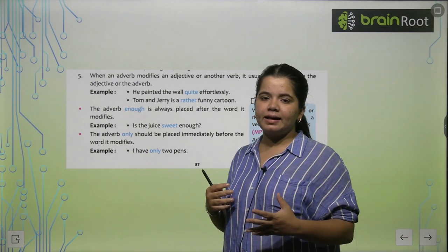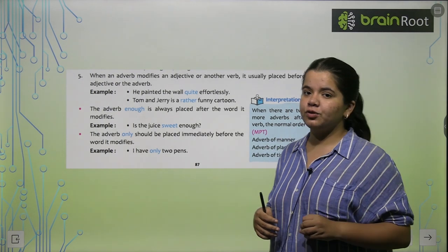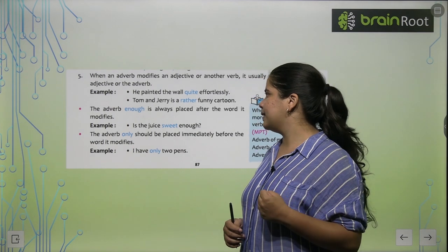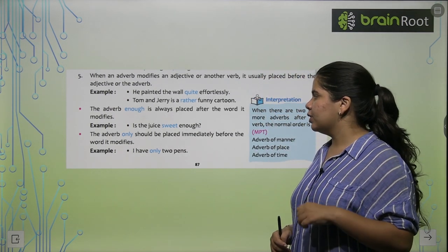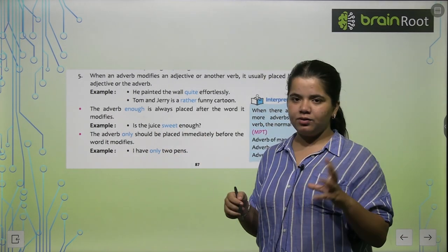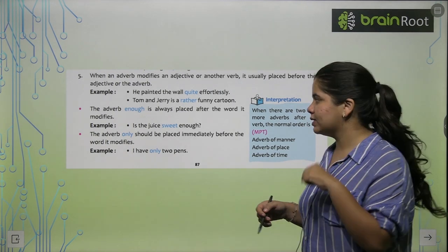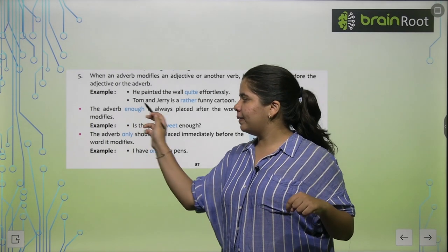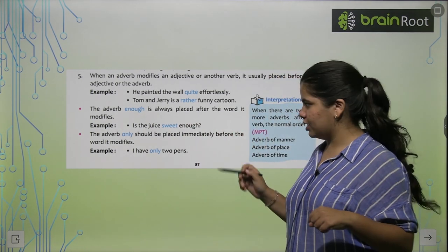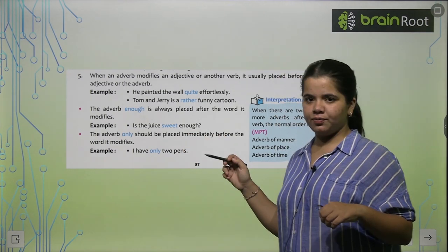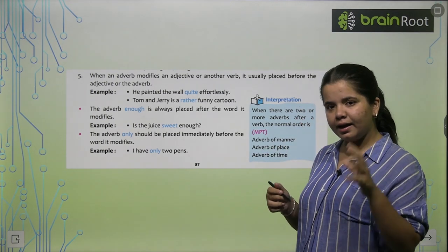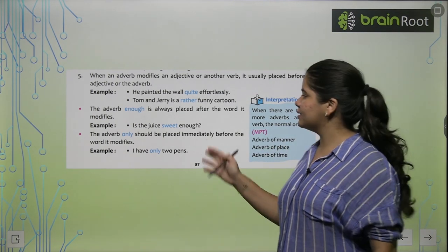You have to read these rules again and again, otherwise you will forget them. The adverb 'enough' is always placed after the word it modifies. For example, 'Is the juice sweet enough?' — here 'enough' comes after the adjective 'sweet' which it modifies.